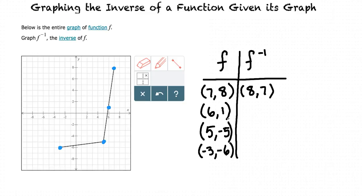Additionally, for the point (6, 1) for the function f, we have (1, 6) as a point for our inverse.